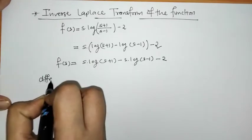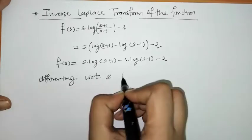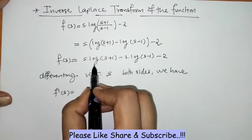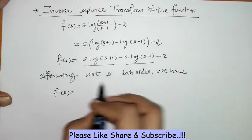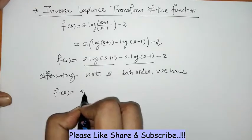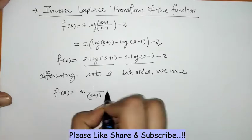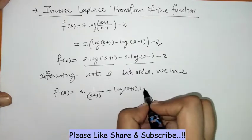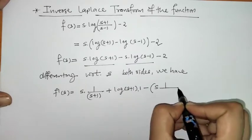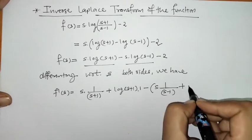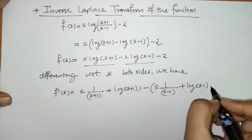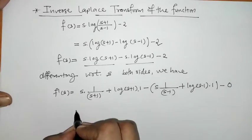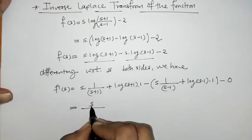For this we have to differentiate f(s) with respect to s. So here we have f'(s). By the product rule applied to each term: s·(1/(s+1)) plus log(s+1)·1, same here s·(1/(s-1)) plus log(s-1)·1, and the derivative of minus 2 is 0.